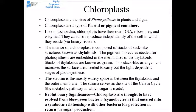Chloroplasts are the locations for photosynthesis in plants and algae — a type of plastid, essentially a pigment container. Like mitochondria, chloroplasts have their own single circular piece of DNA, their own ribosomes (which are different from typical eukaryotic ribosomes), and their own enzymes. They can reproduce independently of the cell they're in, in a process very similar to binary fission.